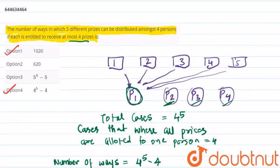So now let us check the options. Option one is 1020, thus option one is correct, and option four which gives 4 raised to 5 minus 4. Thus option one and option four are the correct answers.